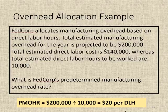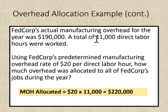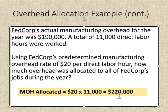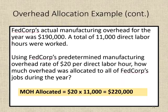Remember, that $20 per direct labor hour is how we will be allocating our overhead. In this particular example, let's say the company worked 11,000 direct labor hours. That means our applied overhead — what we would have applied to jobs — would be $220,000: the $20 rate times the 11,000 actual hours worked.